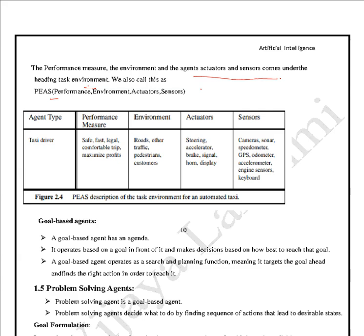For example, the agent type taxi driver: performance is measured based on safety, speed, legality, comfortable trip, and maximized profits. The environment is roads, other traffic, pedestrians, and customers. Actuators include steering, accelerator, brake, signal, horn, and display. Sensors include camera, sonar, speedometer, GPS, odometer, accelerometer, engine sensors, or keyboard. The PEAS description changes for different agents.